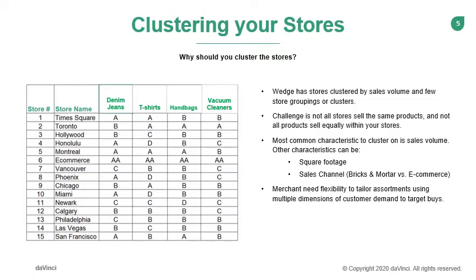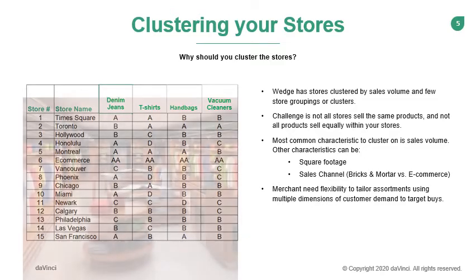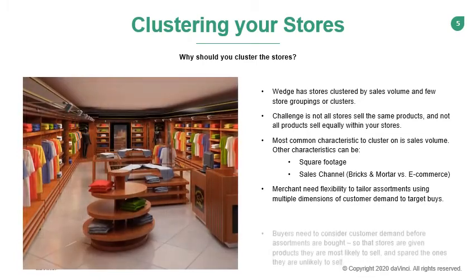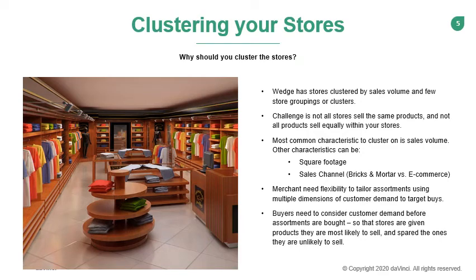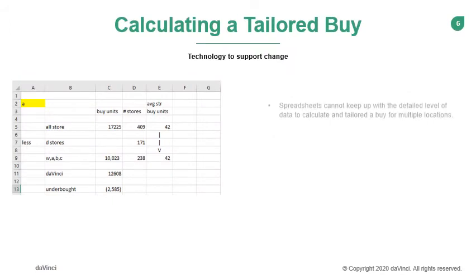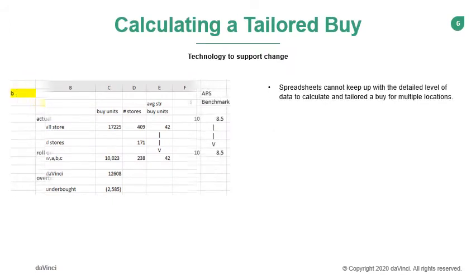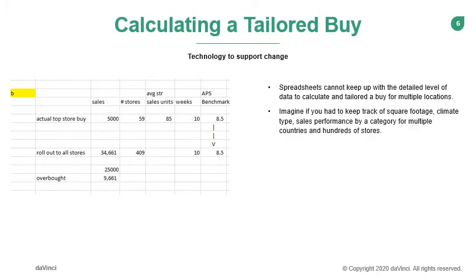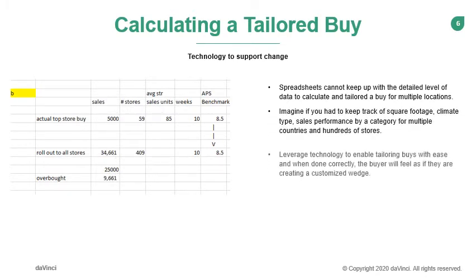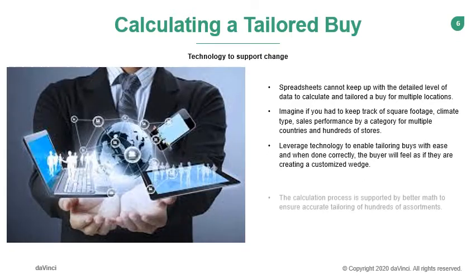You may wonder: how do you define what products will perform best at the locations? That is accomplished by indexing. A baseline is established and stores are given an index of how much product they are likely to sell relative to the baseline, and locations are then clustered on their indices. Spreadsheets were able to be used to support the wedge. However, they cannot manage all of the details required to mathematically calculate the buy quantities to tailor a buy. Technology must support this process and the mathematics behind the buys.